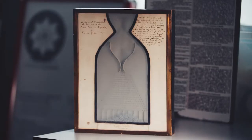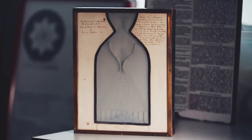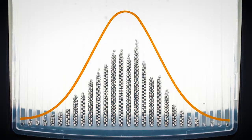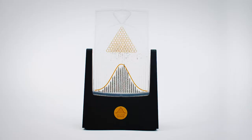The Galton Board, invented in 1876 by the Victorian genius Sir Francis Galton, presents an elegant demonstration of how a normal distribution arises from the combination of a large number of random events.